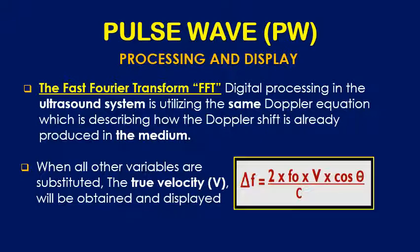The cornerstone of fast Fourier processing is the Doppler equation, which describes the variables behind the production of the Doppler shift in blood flow. By substituting the Doppler shift obtained from the demodulator, the operating frequency F₀ from the transmitter, the cosine of angle theta provided by the sonographer using the cursor, and the speed of sound C (1.54 mm/μs) provided by the software — the true velocity is easily obtained and displayed.